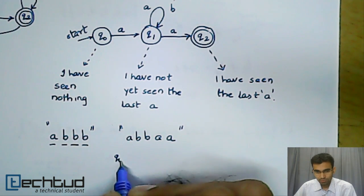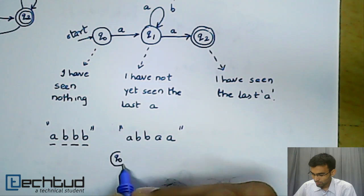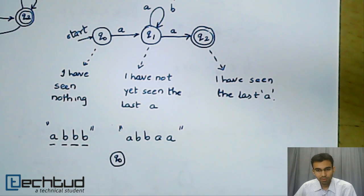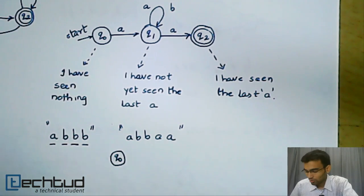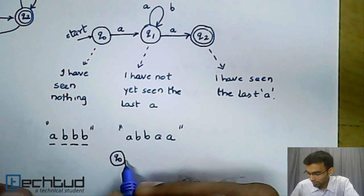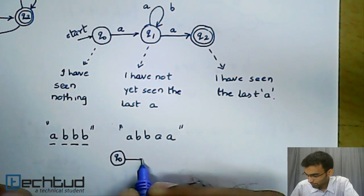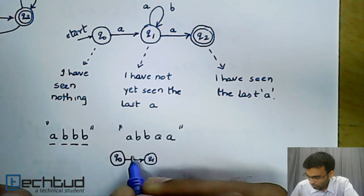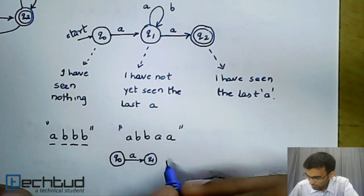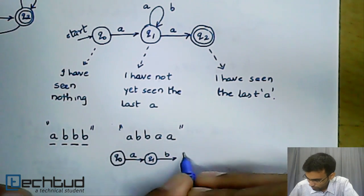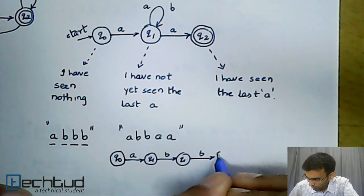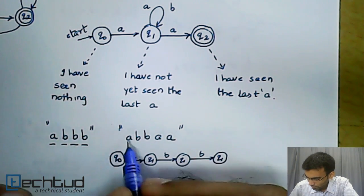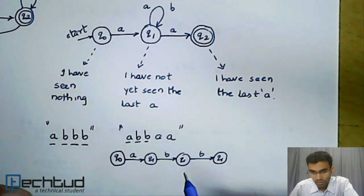We will start in Q0. On an A, we go to Q1. On a B, we remain in Q1. On a B, we again remain in Q1.